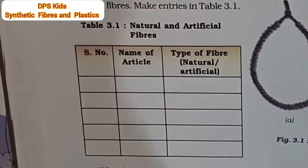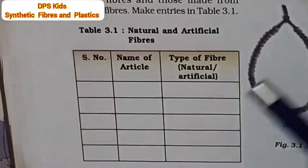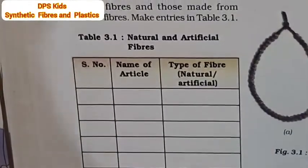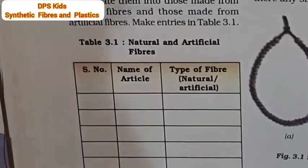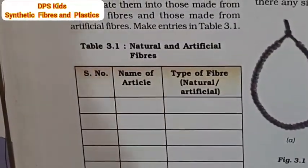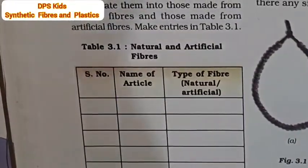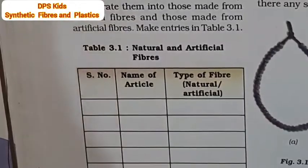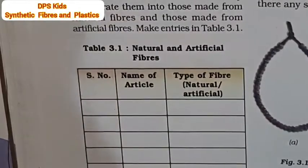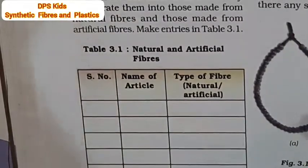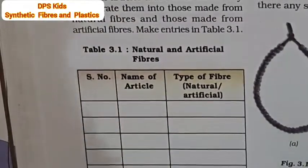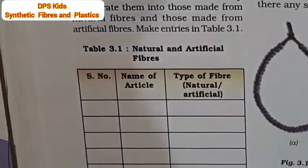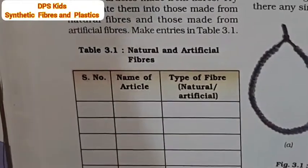First of all, we must remember that natural and artificial fibres are the two types of fibres. Natural fibres are obtained from animals and plants. Artificial fibres, which we call synthetic fibres, are made in factories from chemicals.